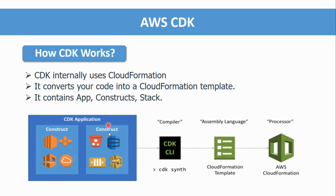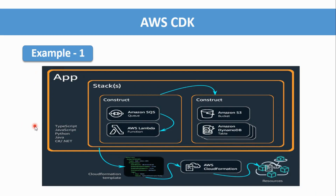To deploy resources, you first run the CDK synth command to synthesize the project. This generates an S3 bucket and a CloudFormation template. You write infrastructure code using any supported language, define constructs — which are groups of AWS services — inside stacks, then run the synth command to generate the CloudFormation template used for deployment.